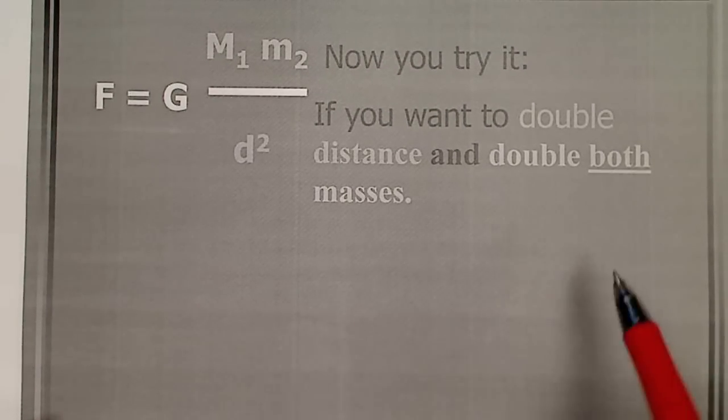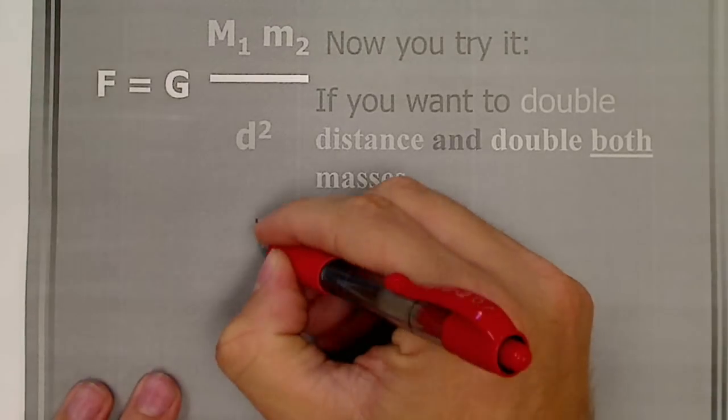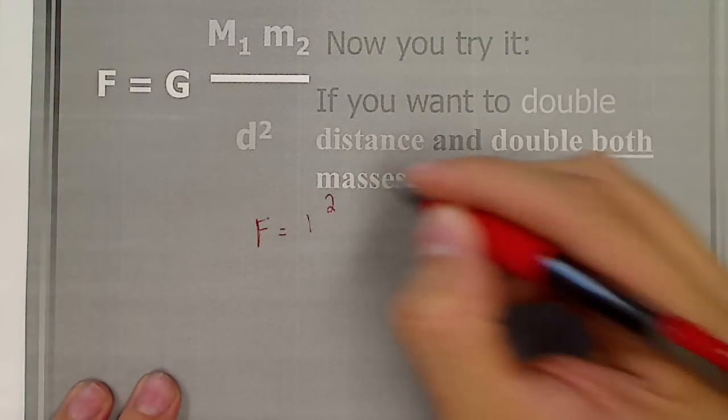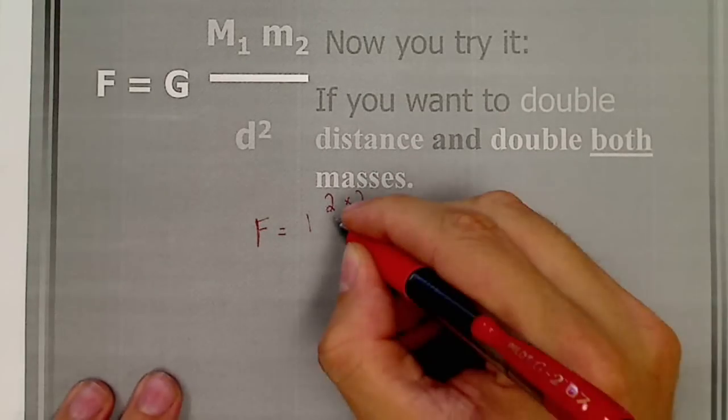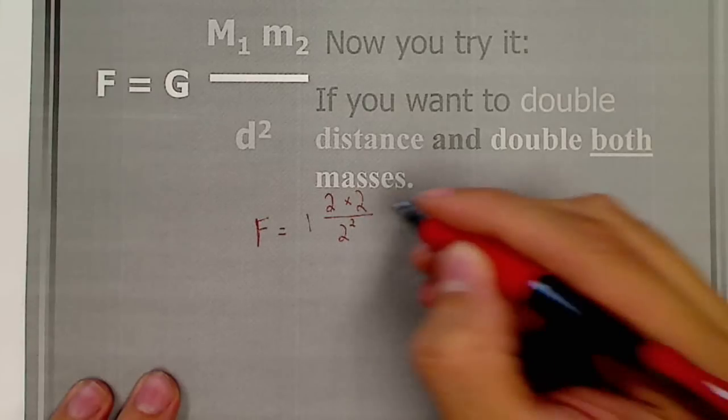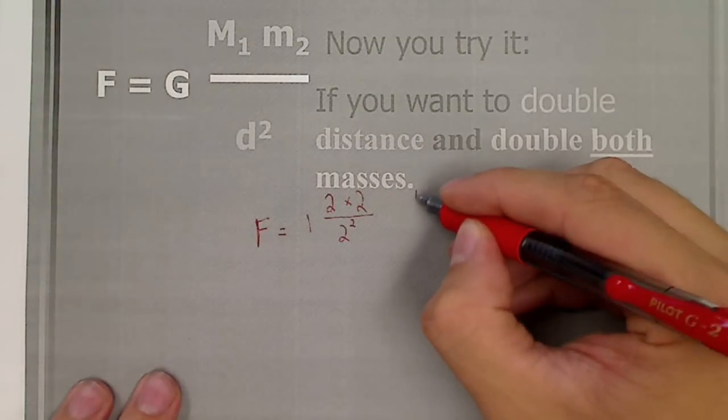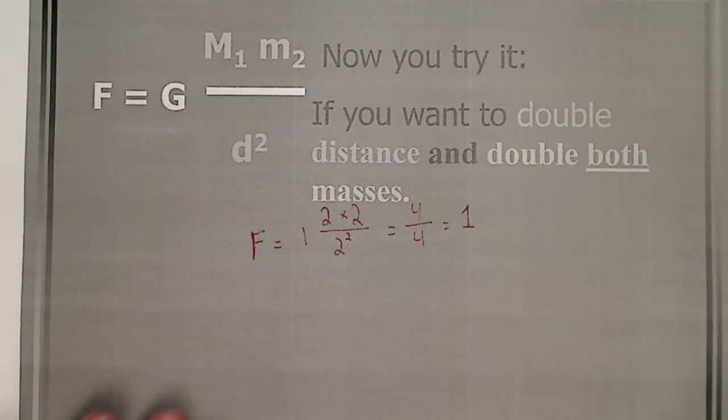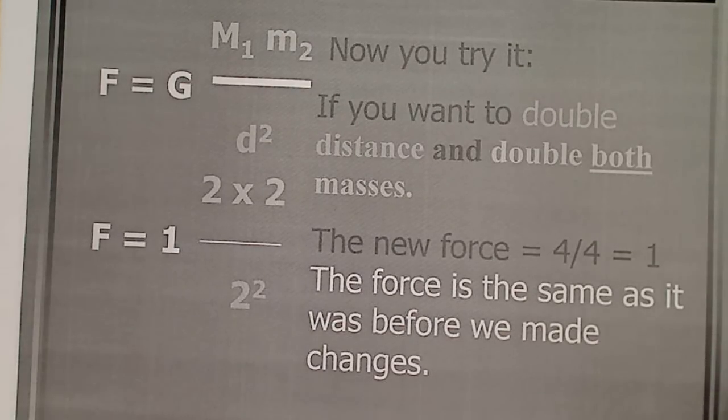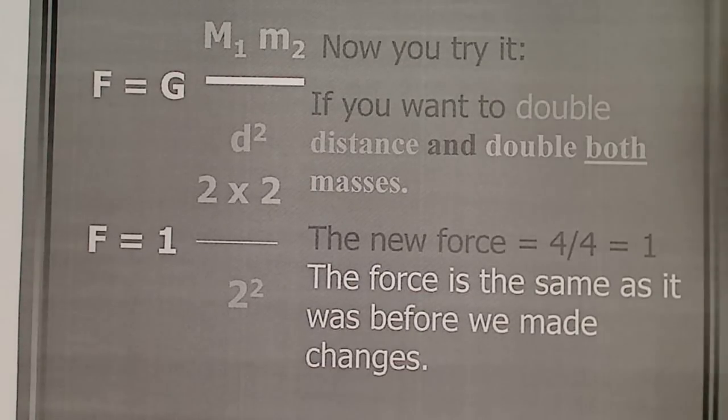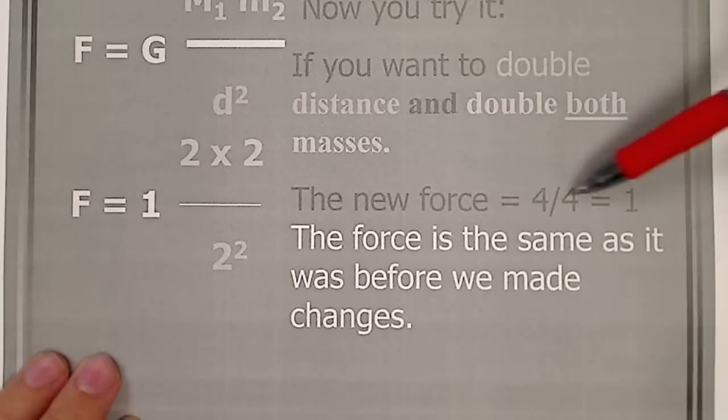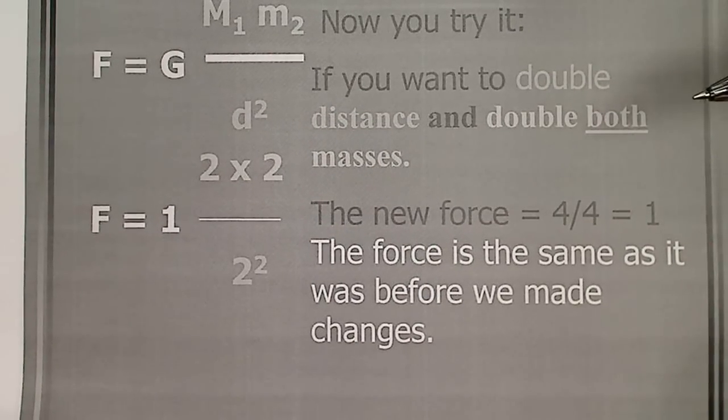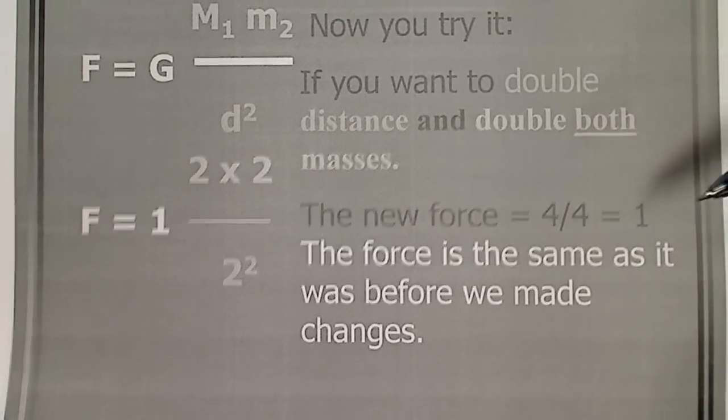So, if you want to double distance and double both masses. F equals, the G stays the same. We double the first mass. And we also double the second mass. And then we double distance. But it's squared. 2 times 2 is 4. Divided by 2 squared, which is 4. So, this gets us back just to 1. Our normal. Our base. So, the force is the same as it was before we made changes. Because we might have double masses, which is increasing the force. But we also have double the distance, which is decreasing the force. So, it all comes out to just our standard.